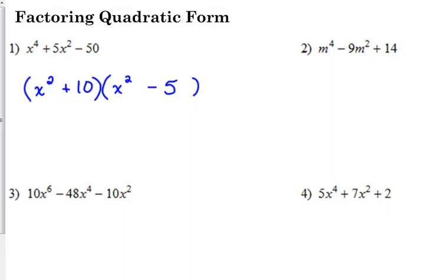You can always FOIL it back out to check it. x squared times x squared is x to the fourth. The outside gives us negative 5x squared. The inside gives us positive 10x squared. That's what's going to combine to give us the positive 5x squared. And then 10 times negative 5 is negative 50.